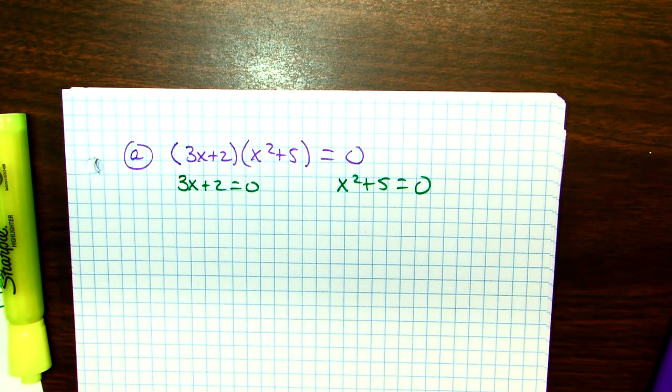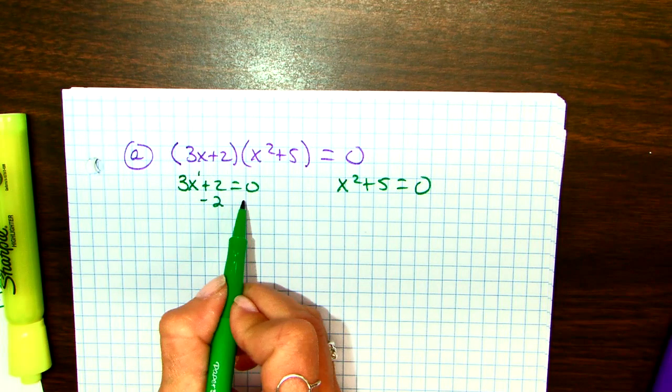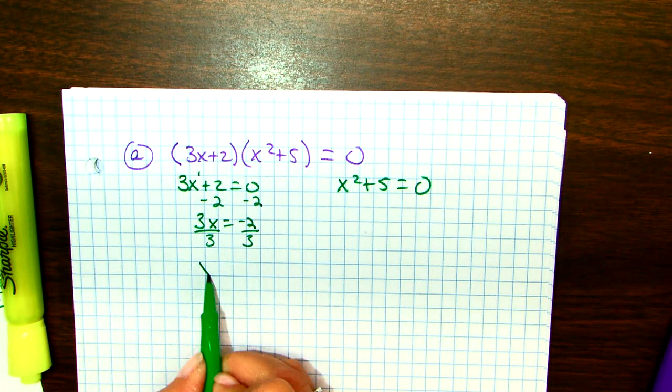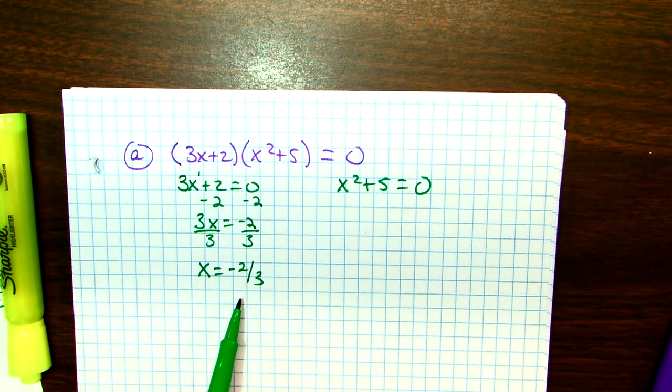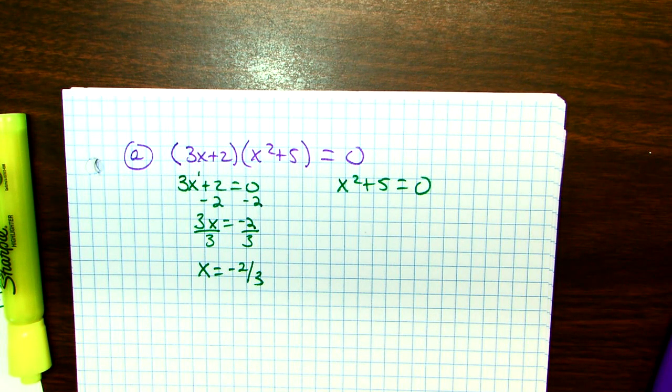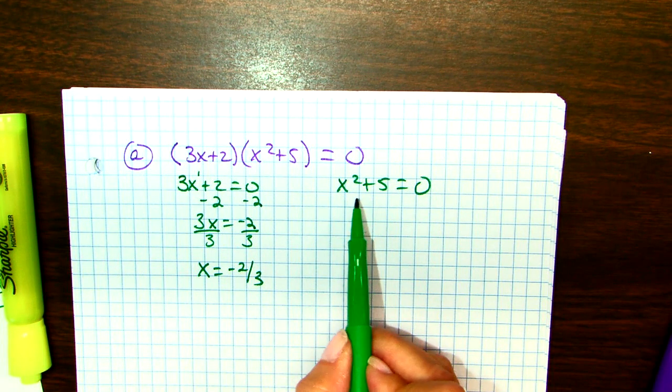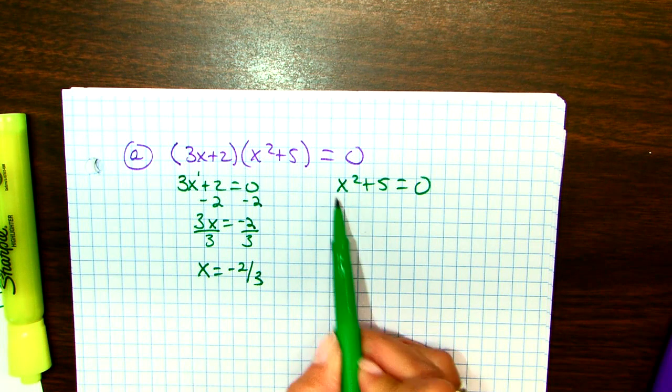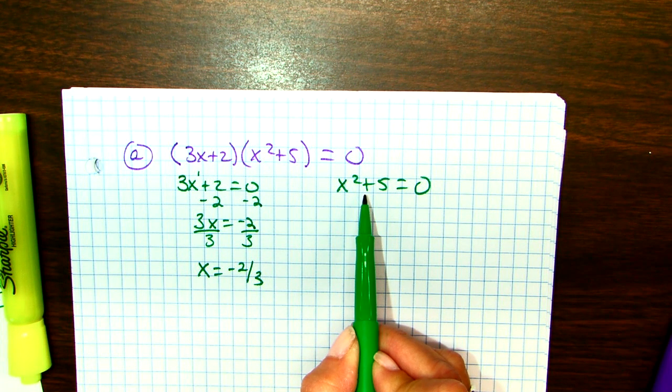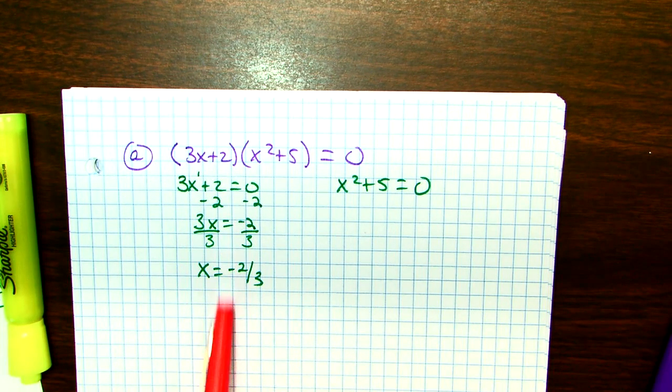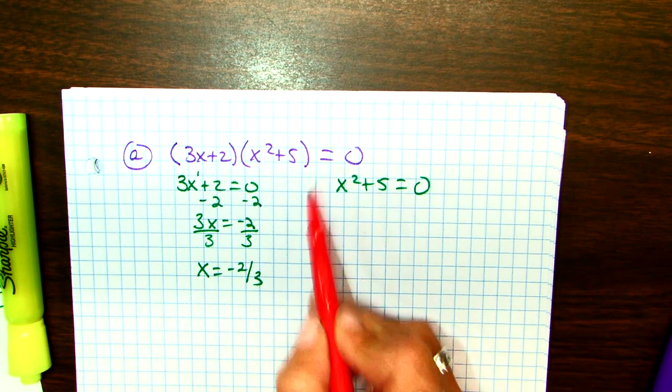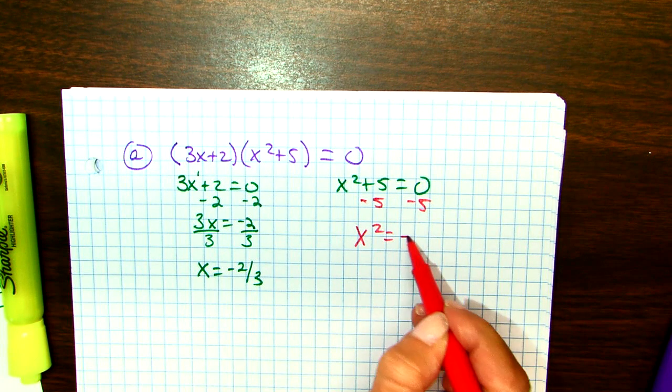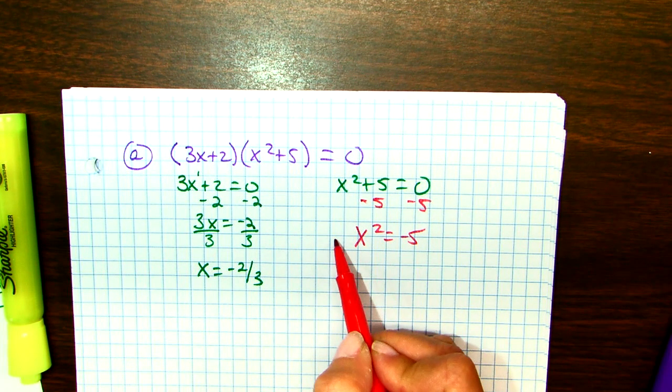Set them equal to 0 and solve them. So, this is a linear. This is easy. Subtract 2, right? Divide by 3. x is negative 2 thirds. There's one solution. Then I come over here. Now, you could do quadratic formula with this. Quadratic formula works on all quadratics. But, since we're missing that middle term, the bx, right? We don't have a b. It's 0. You can solve this almost exactly like you do this one. And this will always happen on the grouping ones. It will always be a quadratic that looks like this. So, you can just subtract 5.